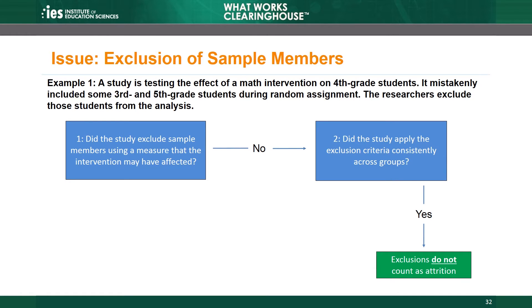Exclusions often occur in larger random assignment studies that may not have the time or resources to follow every student in their sample. Such studies may choose to collect follow-up data from a random subsample of the initially randomized sample. For example, a study might randomly assign 2,000 students and then select a random subsample of 500 students to follow. Random subsampling from the full initial sample of 2,000 students is perfectly acceptable from the WWC's point of view, because the exclusion criteria was random, so the intervention couldn't affect it, and the study applied it consistently across groups.